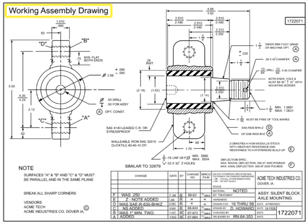Working assembly drawings combine detail drawings and assembly drawings. These drawings contain enough information to both create the subcomponents and assemble the finished product. Working assembly drawings show dimensions where required, as well as balloon identifiers to indicate each separate component part of the assembly. Working assembly drawings are ideal for smaller, simpler assemblies. Since they combine both detail and assembly characteristics, they can become complex very quickly.